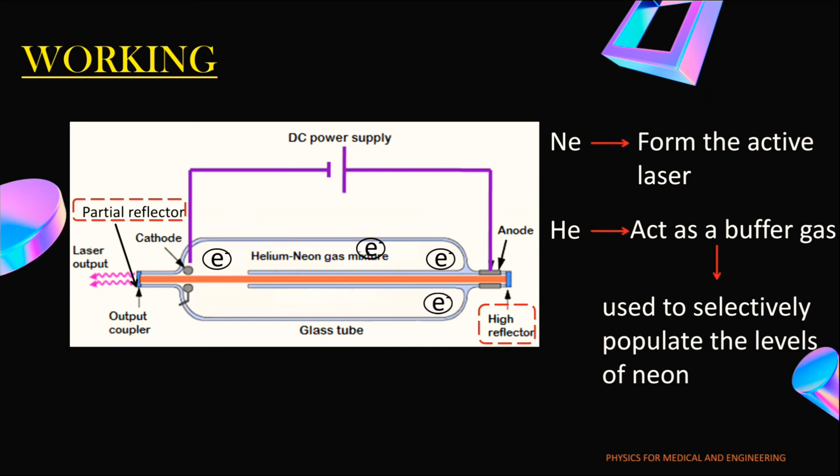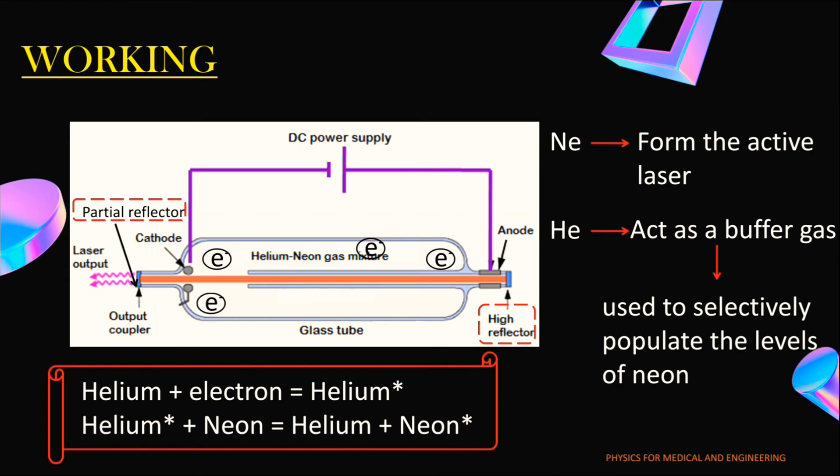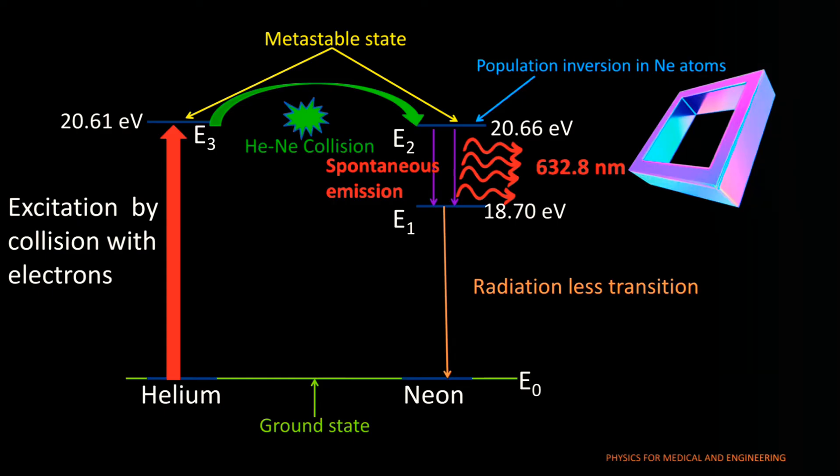Now this is the way by which we can represent the excitation process. When the electron collides with the ground state helium atom, it makes them move to a higher excited state. When this excited helium atom collides with the ground state neon atom, it makes the neon atom move to a higher excited state. After passing the energy to the neon atom, the helium atom moves spontaneously to the ground state.